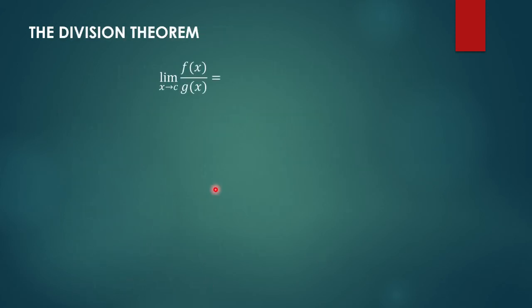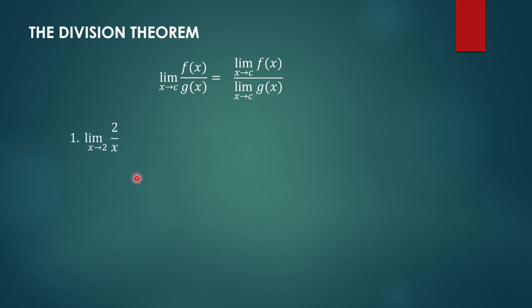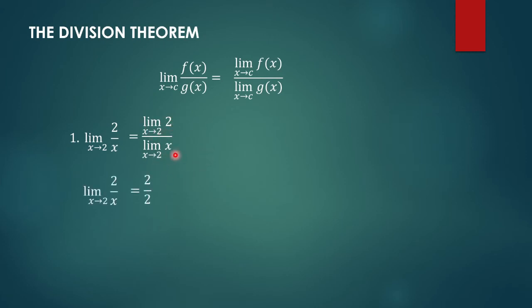For the Division Theorem, the limit of f of x over g of x as x approaches c can be written as the limit of f of x as x approaches c over the limit of g of x as x approaches c. For example, the limit of 2 over x as x approaches 2 can be written as the limit of 2 as x approaches 2 over the limit of x as x approaches 2. The limit of 2 is 2 and the limit of x as x approaches 2 is 2, so we have 2 over 2, which equals 1.